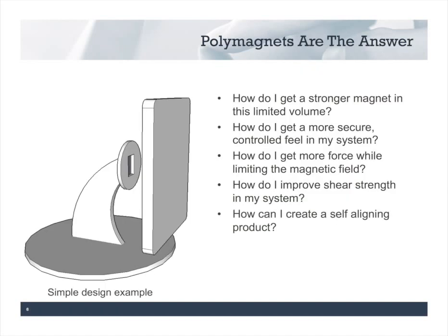CMR's polymagnets are the answer to a lot of design problems. Let's take a simple design example and look at some questions that may come up. Say we want to get a stronger magnet in a limited volume, a more secure and controlled feel as the system comes together. How do you get more force while limiting the magnetic field so that you can maintain compatibility with credit cards and compasses? How can you make the product stay together better, improve shear strength, and create a system that self-aligns as you bring the two components together?